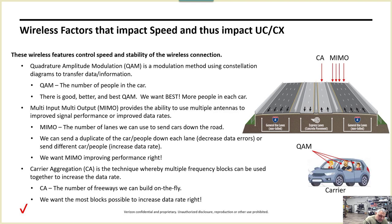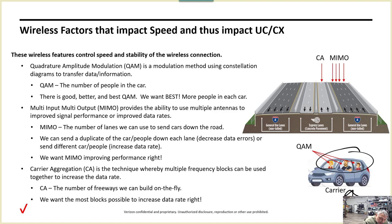QAM is the way we put data bits on a carrier wave on the frequency we're using. We can equate that to a car. The type of QAM — the order of QAM — is how many people we can put in the car. We can put one person, two people, five or six people in the car, and that car drives from the tower to the UE — user equipment, FWA router, phone, whatever. Think of QAM that way.